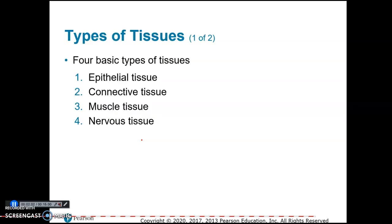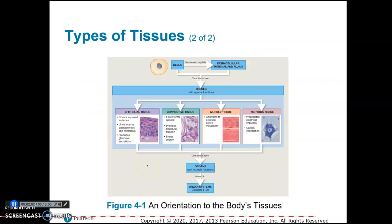The four basic tissue types are epithelial, connective, muscle, and nervous. This diagram explains the four tissue types, gives a bit more detail about them, and provides an image or example of what they look like.